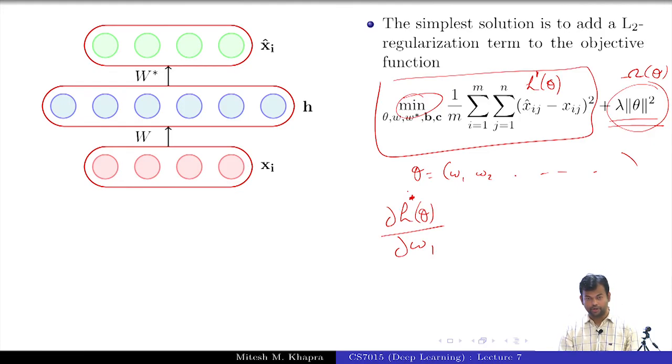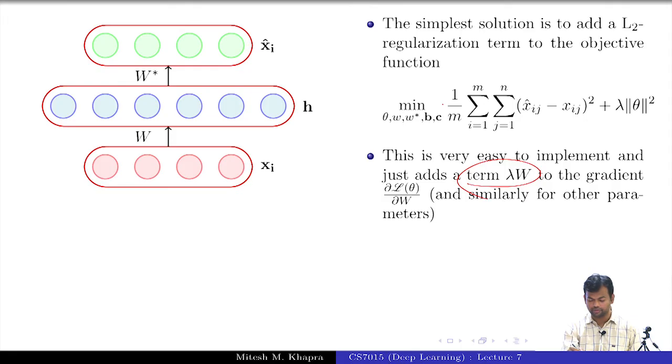So this derivative is going to be a sum of two derivatives. Out of that one you already know, what is the second? 2 times lambda w1, right. So it is a very simple change to a gradient descent update rule. How many of you see that? Whatever update rule you had just add minus 2 lambda w into that. Should have been 2 lambda w, but of course you do a half here. Is it ok?